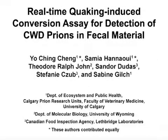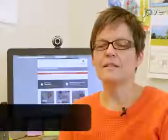The overall goal of this protocol for real-time quaking-induced conversion assay is to allow sensitive detection of chronic wasting disease prions in cervid fecal samples. This method can help answer key questions in the CWD research field, such as when are infected cervids shedding CWD prions in feces. The main advantage of this technique is that it is specific, sensitive, and it enables high throughput of samples.